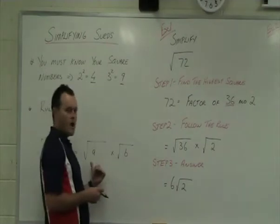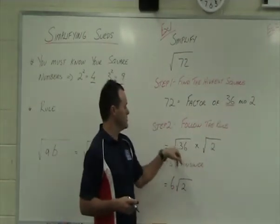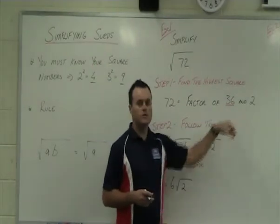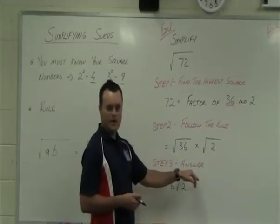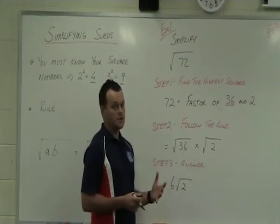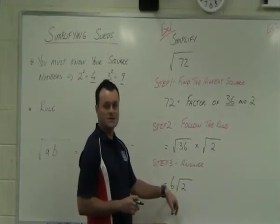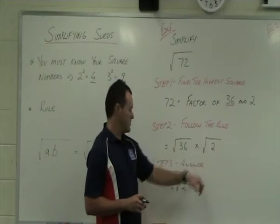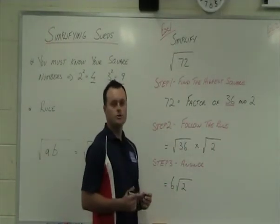So step two is to follow our rule. So now we're going to go A times B using these two numbers. So root 36 times root 2. Step three then is to do our answer. The square root of 36, and you should already know the answer to that because you wrote it down, but you can do it on your calculator. It's nice and easy. Square root of 36 is 6.